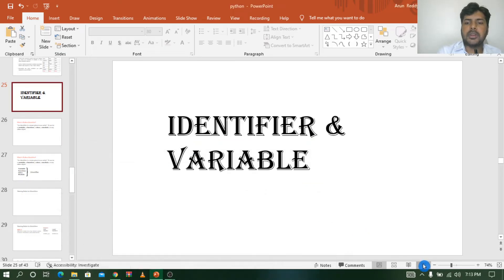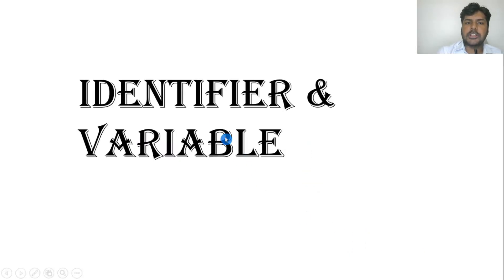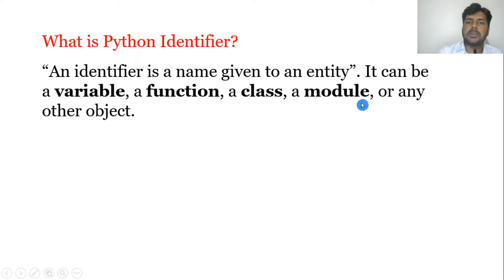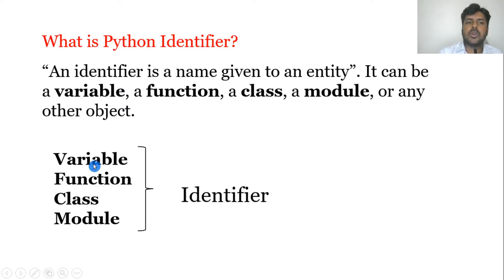Let us start our topic: identifier and variable. So first, what is an identifier? An identifier is a name given to an entity. It can be a variable, function, class, or module. That means variable, function, class, and module are also called identifiers — all of these come under the identifier.